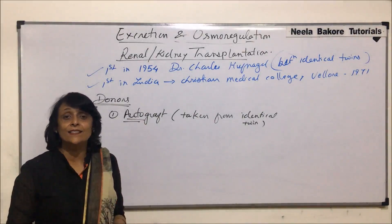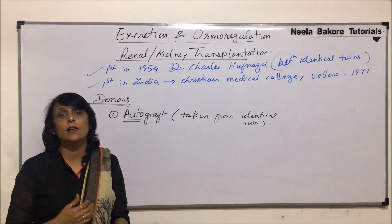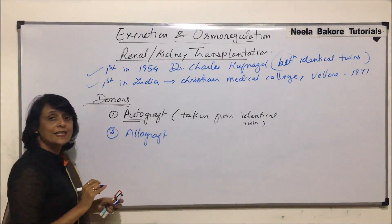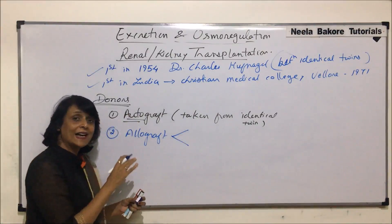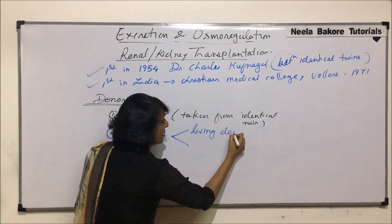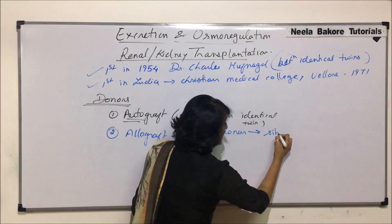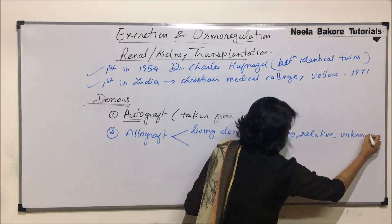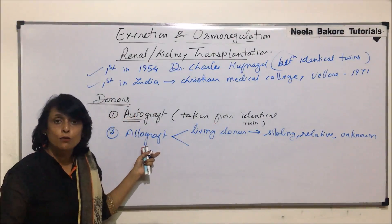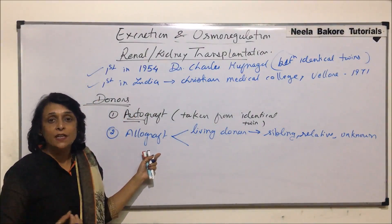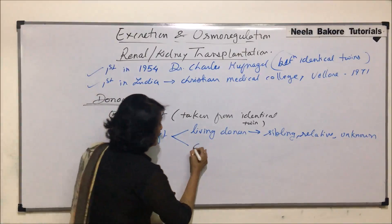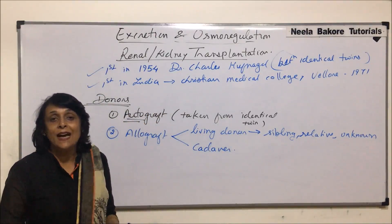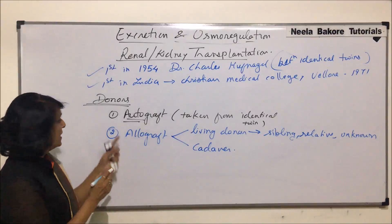If the kidney is taken from any other donor — who can be a sibling, a close relative, or any other member — then we will call it an allograft. That other person could be a living donor, such as a sibling, a relative, or even an unknown person. If the kidney is not available from any living individual, then it is taken from a dead body, known as a cadaver — someone who has died due to brain death from some kind of injury.